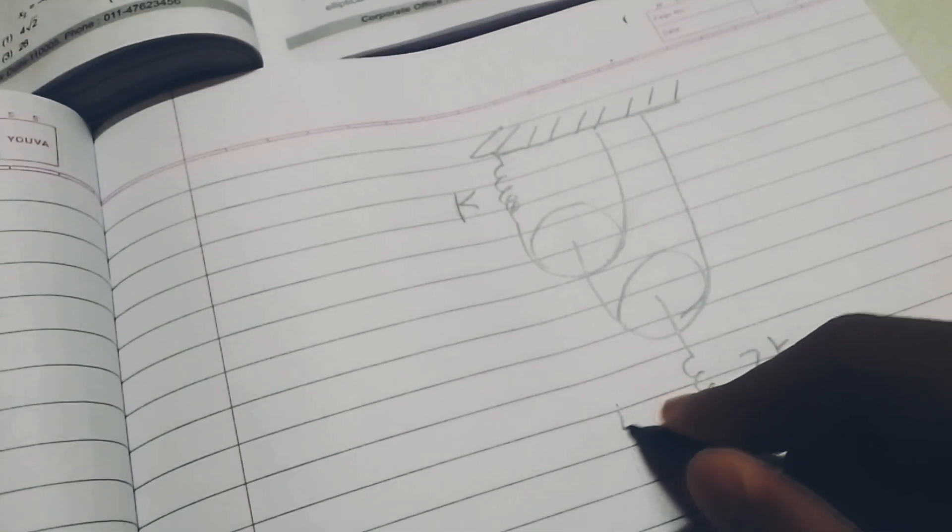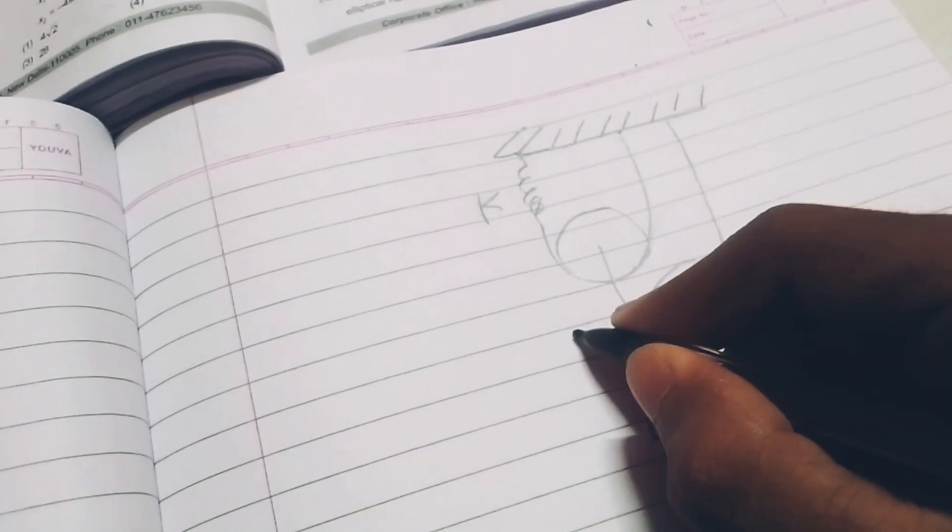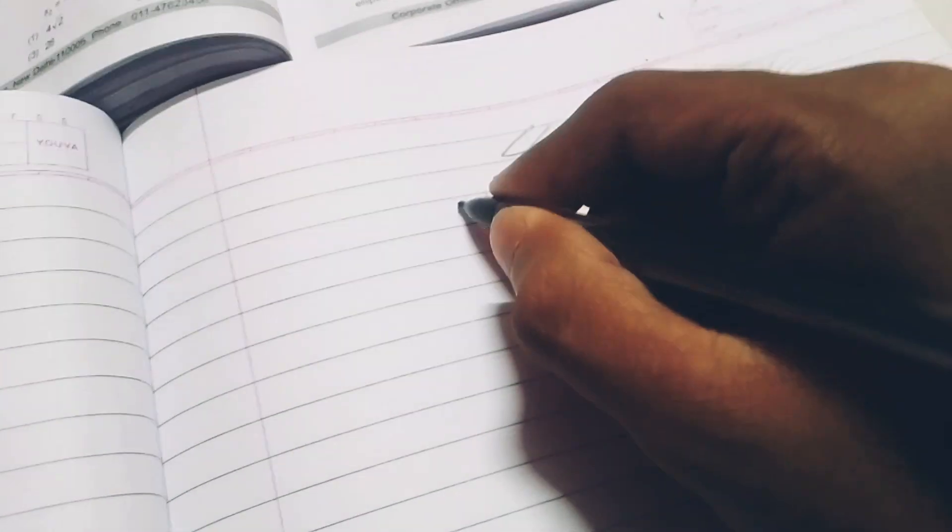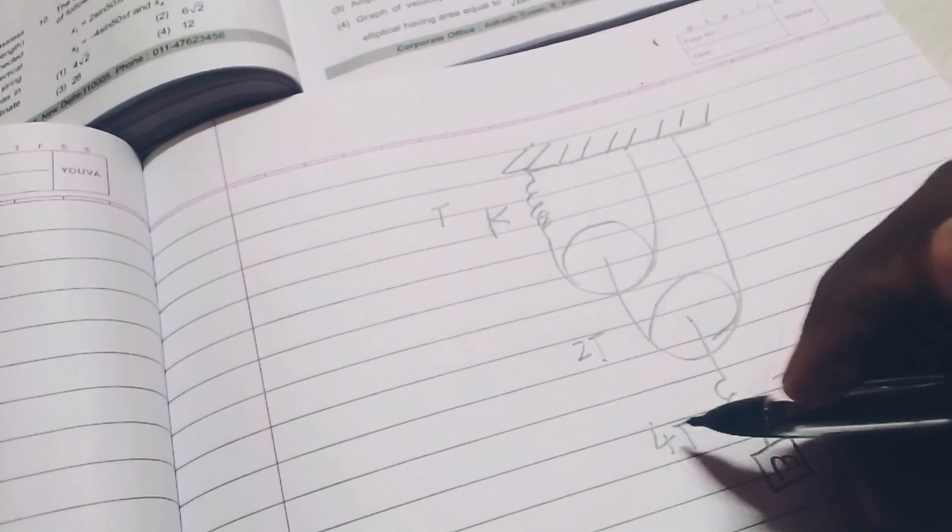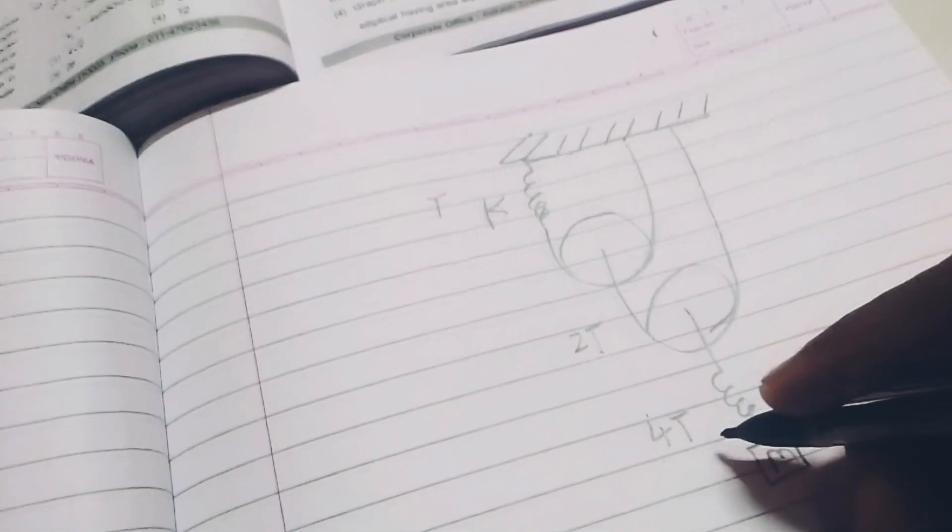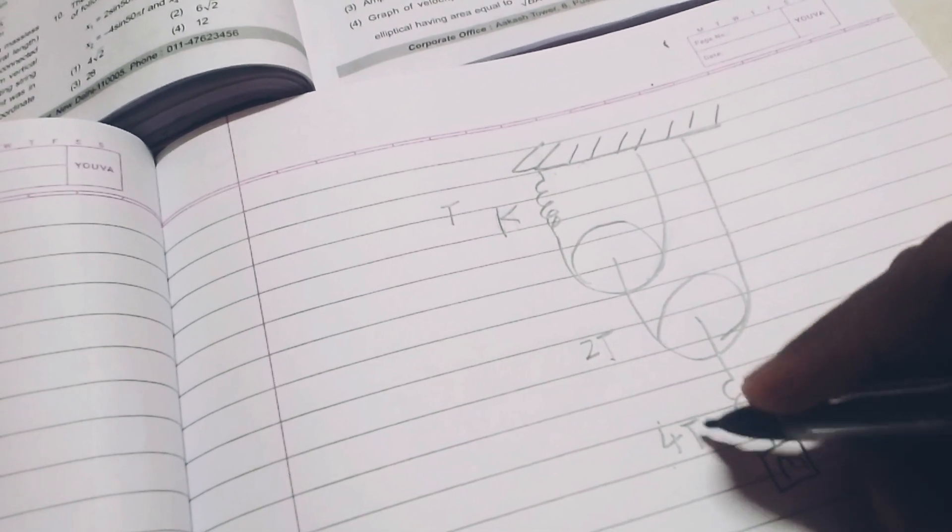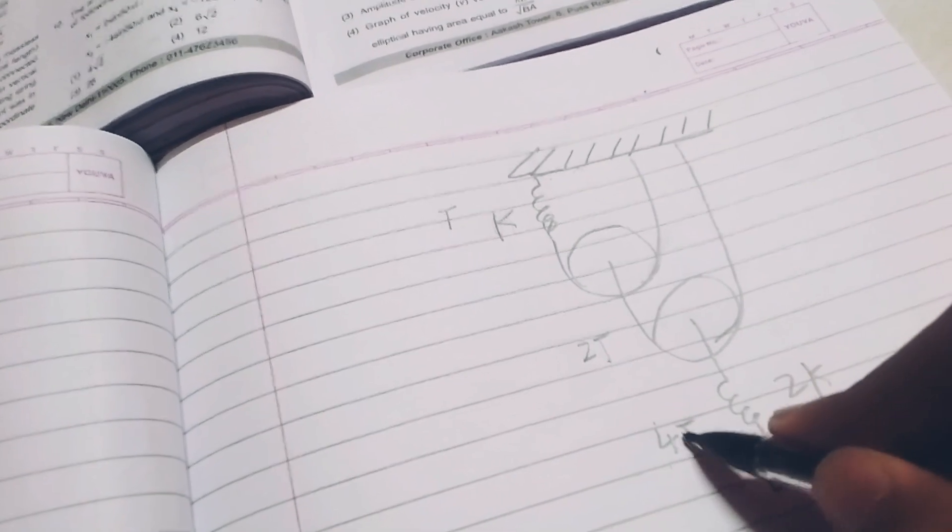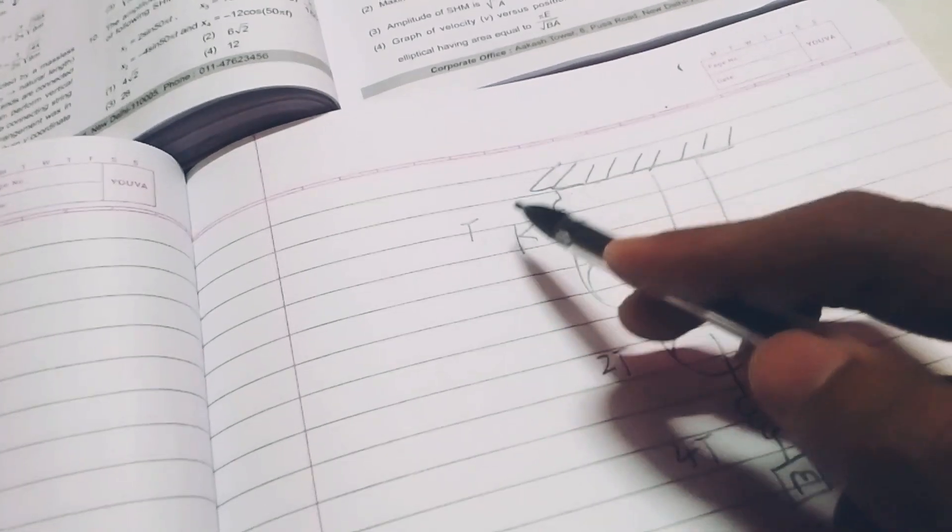Now, I will assume that here I have tension 4T. Then, here it will be 2T and here it will be capital T. The basic criteria behind taking tension as 4T here is that I want to get rid of fractional values of T.